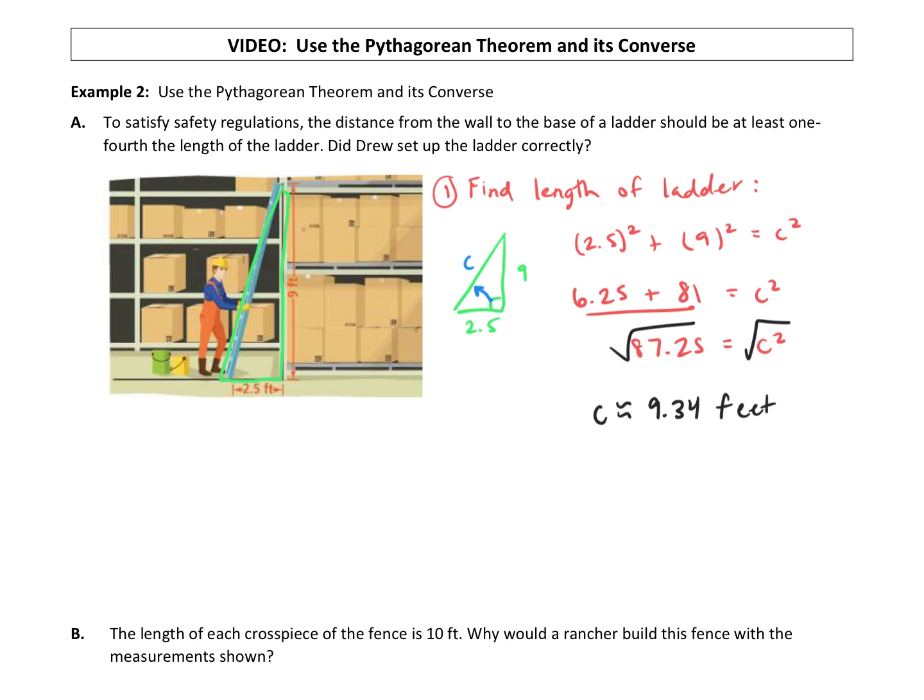All right, so in the picture let me label 9.34. Sometimes it's hard to find a color that's going to show up in the picture. So to satisfy the safety regulations, the distance from the wall to the base of the ladder, which is 2.5 feet, should be at least one-fourth the length of the ladder. So our second step, we're going to find one-fourth the length of the ladder.